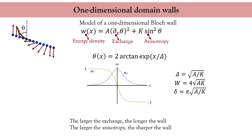Notice that delta is not the domain wall width itself. The domain wall width can be determined from the tangent of the m_z component close to the center of the wall and is equal to π times delta. Finally, the total energy of the wall is given by the square root of the product of the exchange and the anisotropy. It is always positive, so it does cost energy to create a wall.